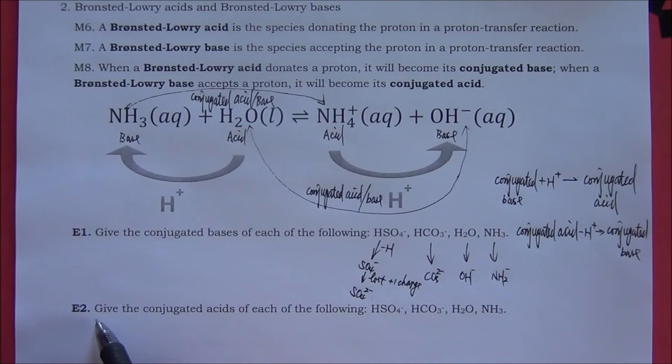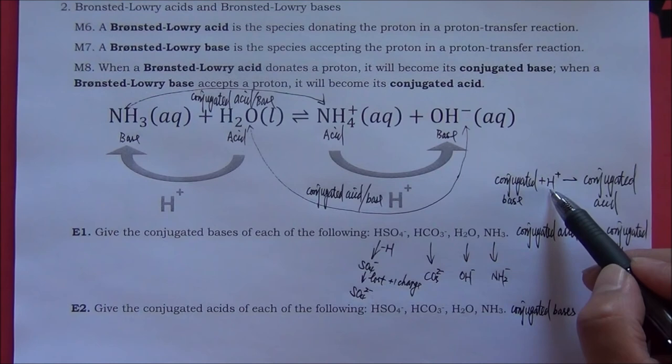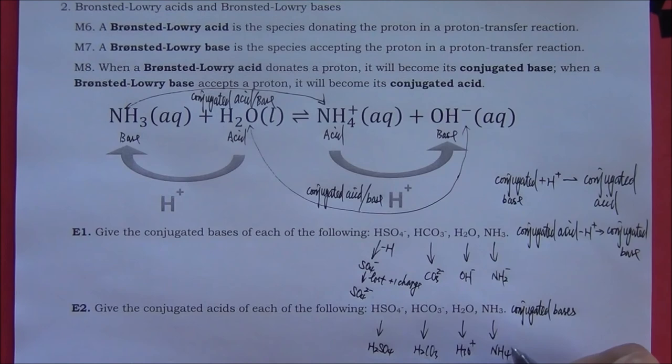Example 2: Give the conjugate acids of each of the following. These species should be considered as the conjugate bases. From a conjugate base, if we take in one proton (H⁺), it will become a conjugate acid. These resulting species are the conjugate acids.